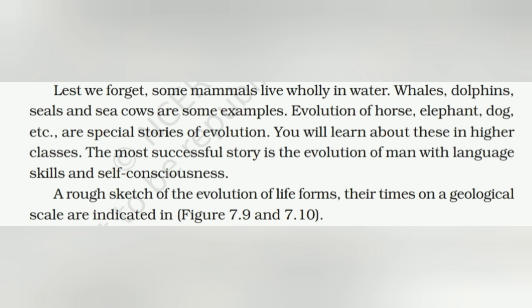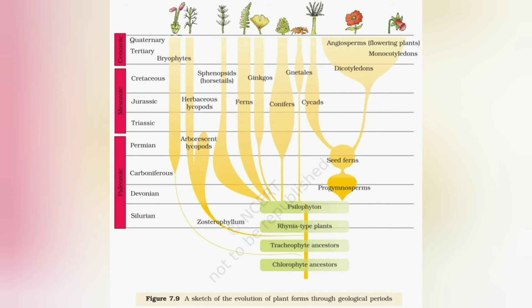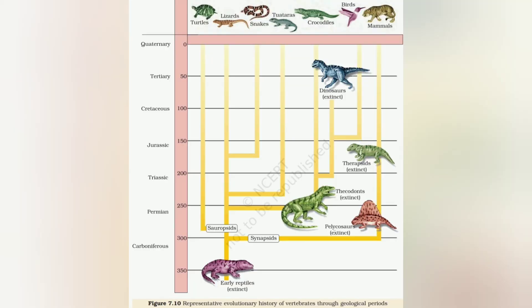The most successful story is the evolution of humans with language skills and self-consciousness. A rough sketch of the evolution of life forms on the geological time scale is indicated in figures showing the evolution of plants and animals through different geological periods.